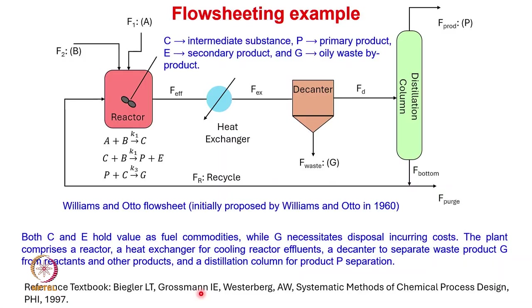Let us take the Williams and Otto flow sheet, a commonly used example in several textbooks, given by Williams and Otto in the 1960s. In this flow sheet, there is a reactor, a heat exchanger, a decanter, and a distillation column. Reactants A and B and a recycled stream are charged to the reactor where three reactions occur: A+B→C, C+B→P+E, and P+C→G. Here C is an intermediate, P is the primary product, E is a secondary product, and G is an oily waste byproduct.